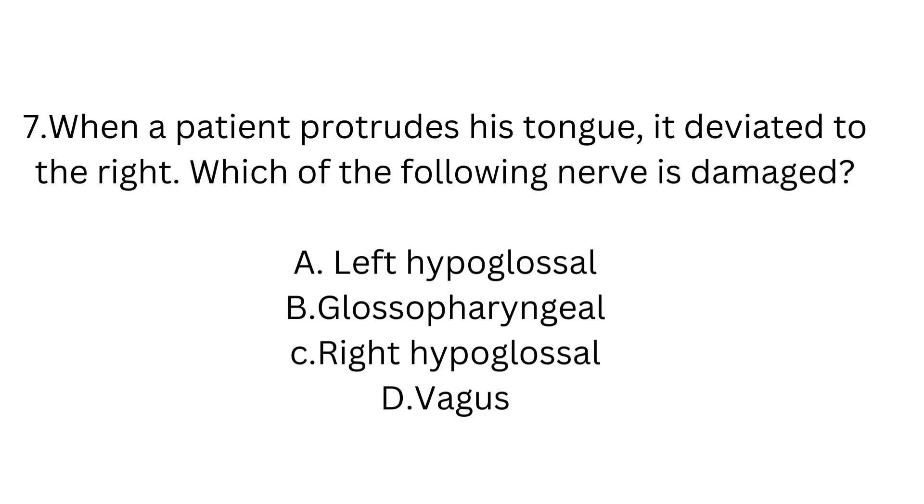Next question: when a patient protrudes his tongue, it is deviated to the right. Which nerve is damaged? We know the muscles are supplied by hypoglossal. When the right side hypoglossal is weak, the left one will push it towards the weaker side when the patient protrudes his tongue. So it is right hypoglossal.